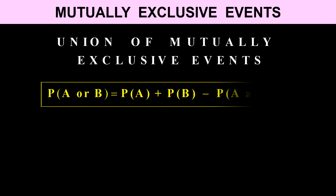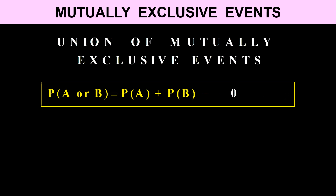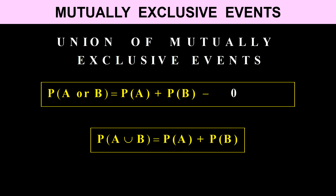Because A and B are mutually exclusive, P(A ∩ B) = 0, so it falls away from the addition rule. The modified addition rule becomes: P(A or B) = P(A) + P(B).